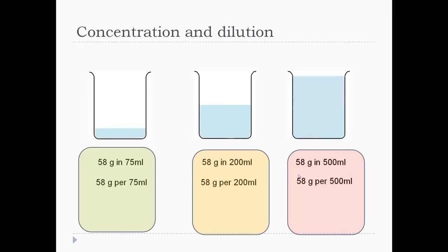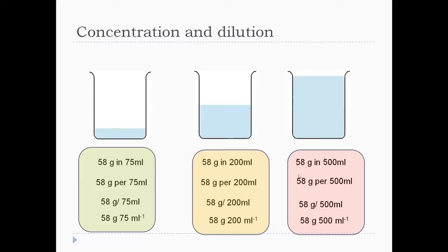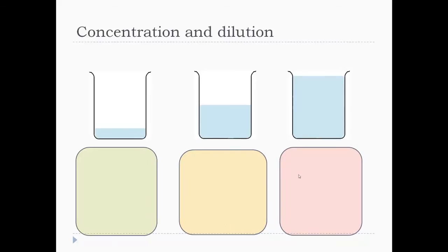We have 58 grams in 75 millilitres in the first beaker — we say that's 58 grams per 75 millilitres. Instead of using the word 'in', chemists often use the word 'per'. So we write 58 g / 75 mL, or equivalently 58 grams per 75 mL⁻¹. I want to show you the different ways of writing a concentration, which is an amount per volume — chemists use lots of different ways, but they all mean exactly the same thing.